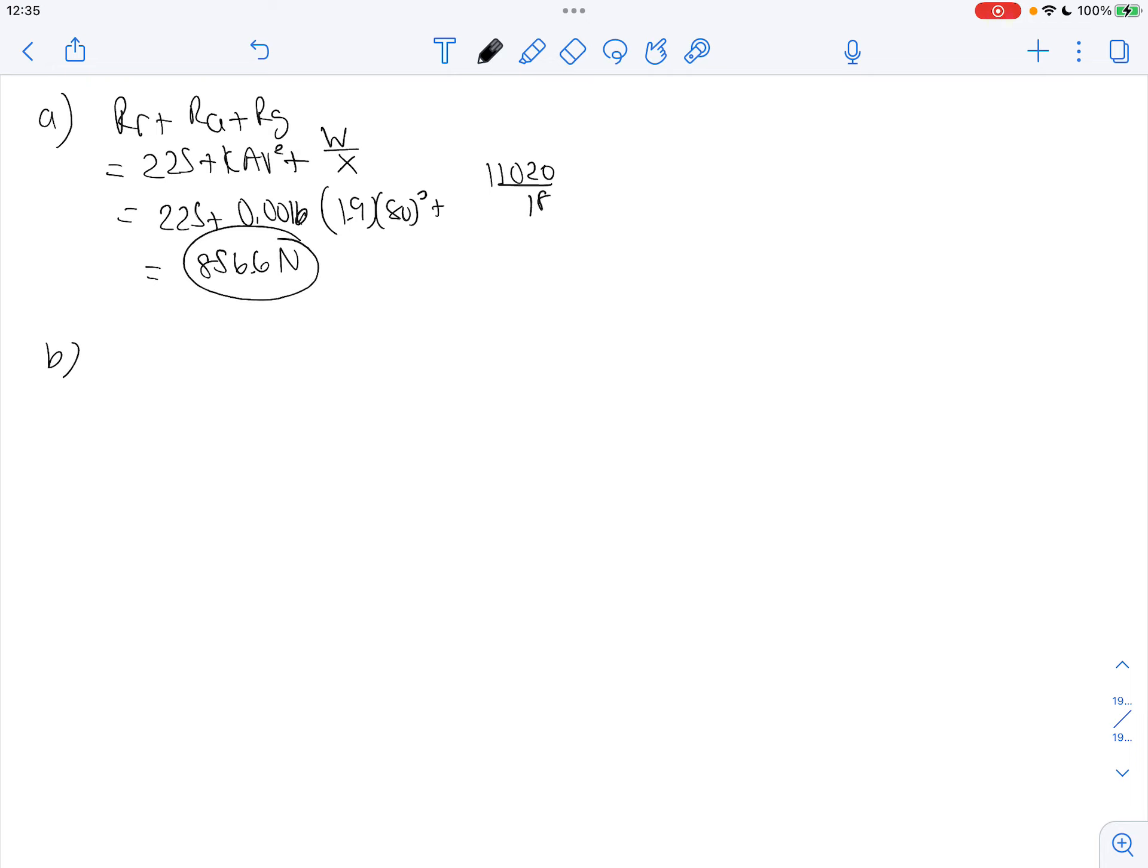Now for part B, we'd like to find the tractive effort available at the wheels. Now our effort is P times our efficiency over V. We plug in 60 times 0.94 times 3,600 divided by 80 to get 2,538 newtons.